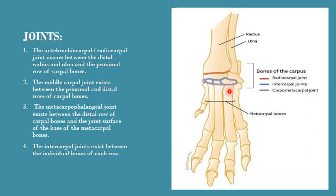Now let's discuss the types of articulations present in the carpus. The first joint is the radiocarpal joint, which is the joint between the radius and ulna bones and the carpal bones. This joint is formed between the proximal row of carpal bones and the distal extremities of the radius and ulna. This joint is also known as the antebrachiocarpal joint.